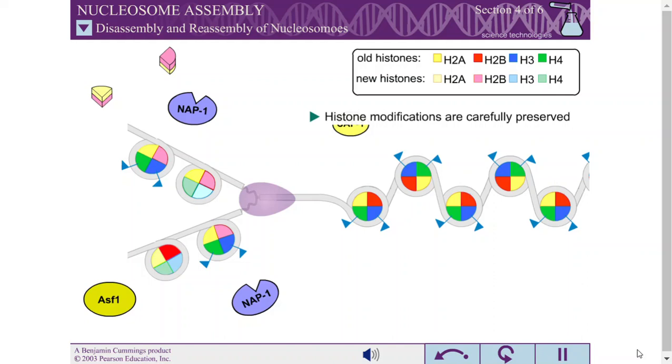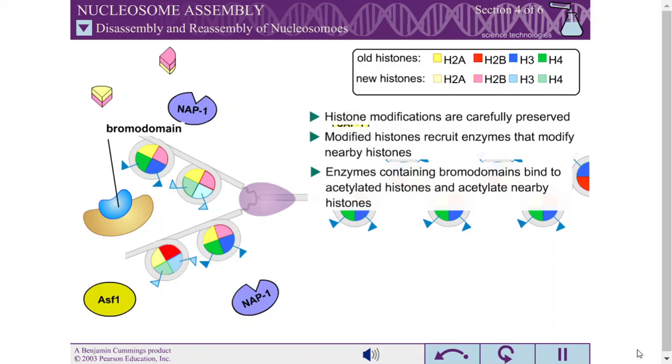Transmitting this histone modification information begins with the incorporation of the modified old histones into each daughter strand. These modified histones are in turn able to recruit enzymes that modify neighboring new histones in the same way. Enzymes containing specialized domains called bromodomains can bind to acetylated histones and in turn acetylate neighboring nucleosomes.